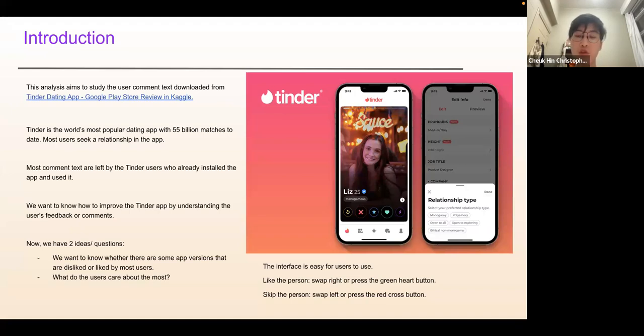The interface is easy to use. If you like the person and she also likes you, then you two will swipe right or press the green heart button then you will match. But if one of you skips the person by swiping left or pressing the red cross button, then you two won't match. Most comment texts are left by Tinder users who already downloaded and used the app. Now we want to know how to improve the Tinder app by understanding the user feedback or comments.